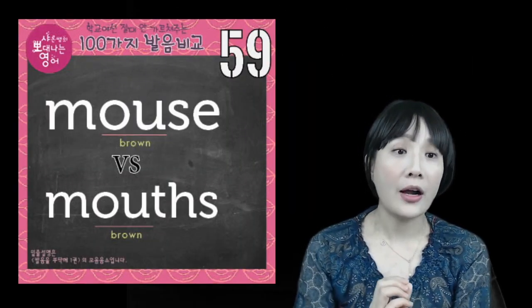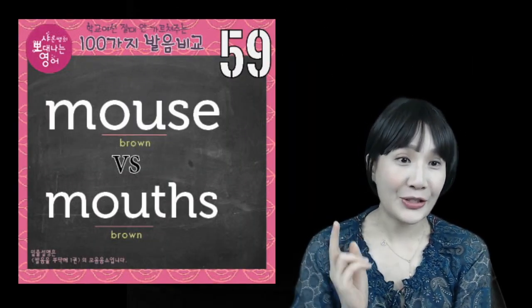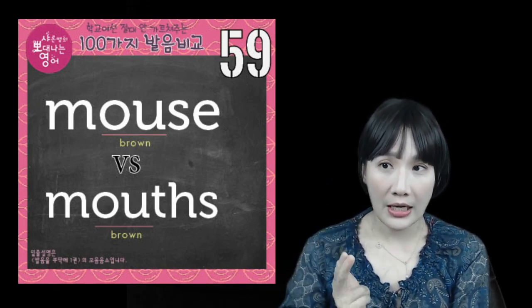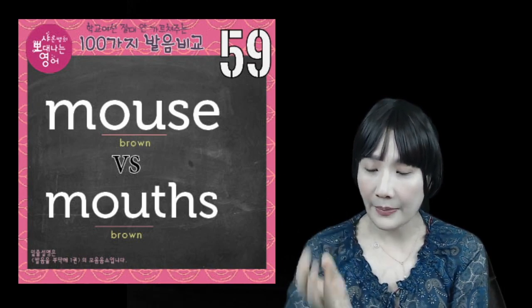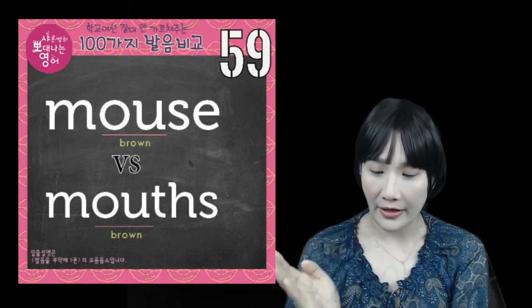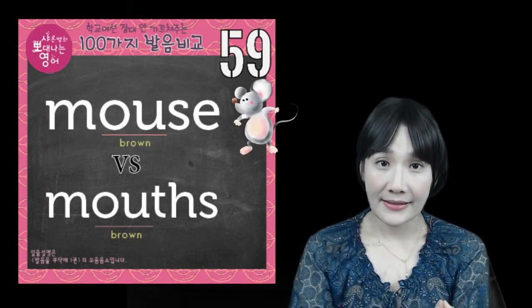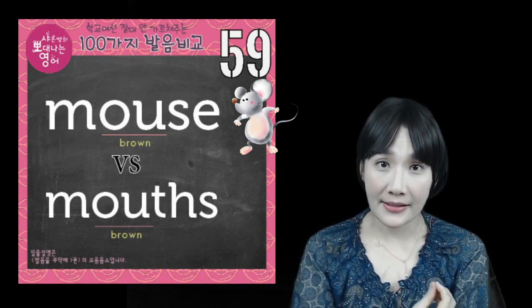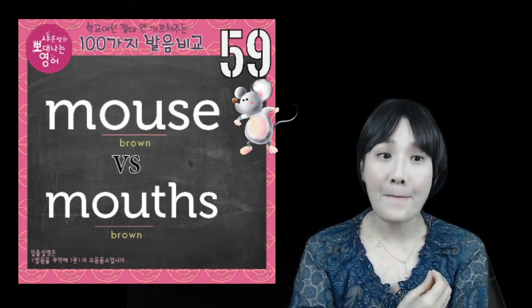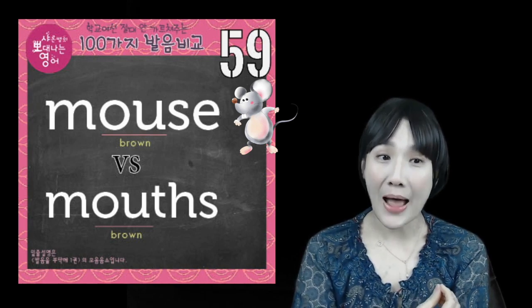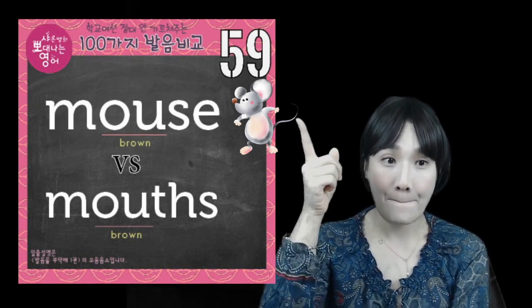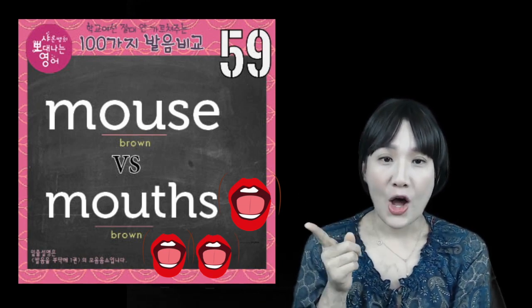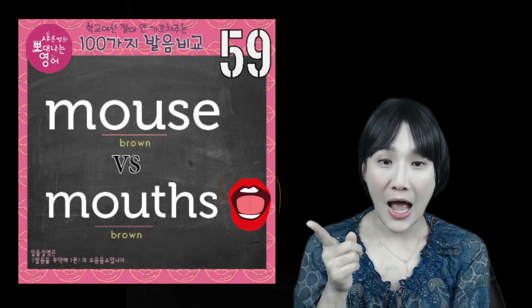오늘 이 두 개를 완벽히 말해서 구글이 타이핑을 하게끔 할 거예요. mouse, mouse, mouse. s 발음 하세요. mouse, mouse. Right, so that's mouse. This one is mouse, mouse.